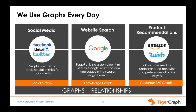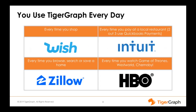Wish.com is a TigerGraph client. Over 300 billion customers shop at Wish.com, and if you're shopping there, the recommendation engine is powered by TigerGraph. If you go to a local restaurant using Intuit's QuickBooks payments, the fraud detection for that gateway is TigerGraph. Every day millions of customers benefit from fraud detection with TigerGraph. If you're using Zillow to look for a home, the recommendations for homes you might like based on your browsing and search history — that's TigerGraph.